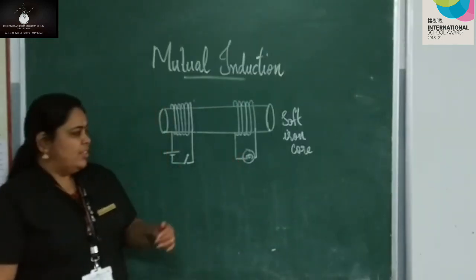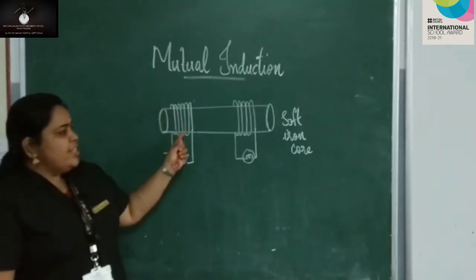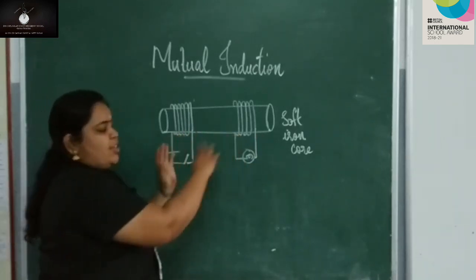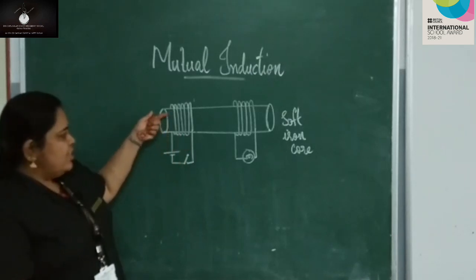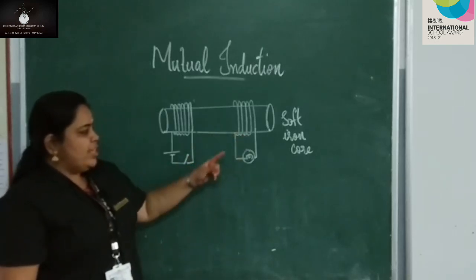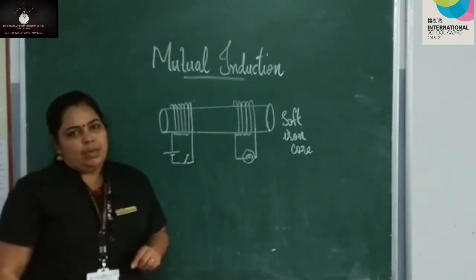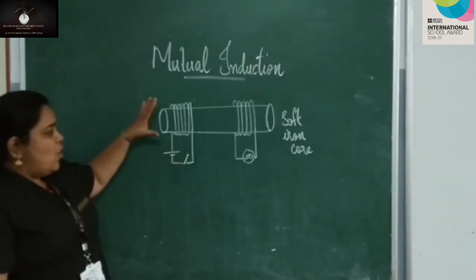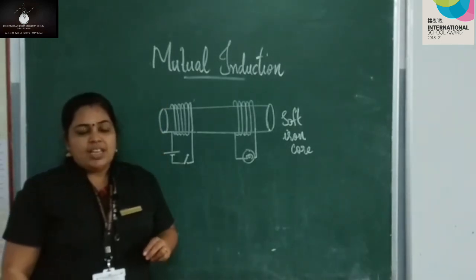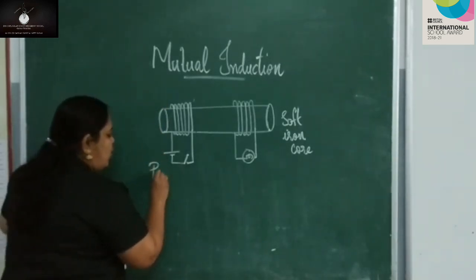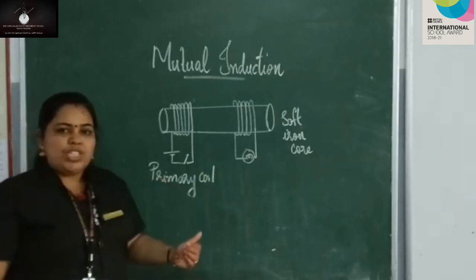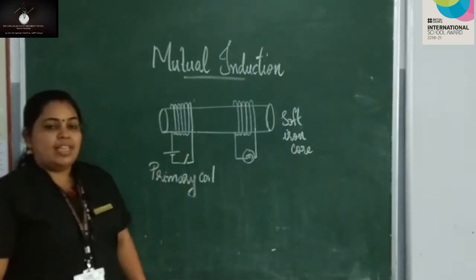Look at this figure. You can see finely insulated copper wire is wound around a soft iron core. There are two sets of coils. This coil is connected to a battery through a switch. And the other end, the coil is connected to a bulb. The coil to which the battery is connected is known as the primary coil.